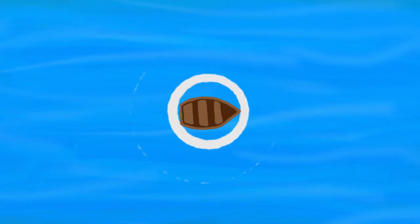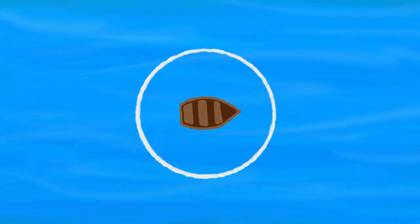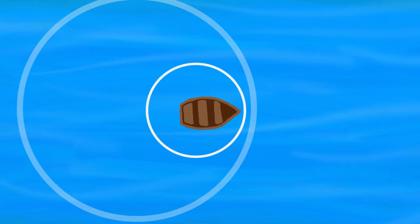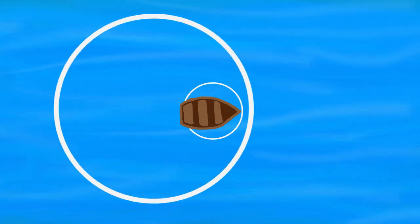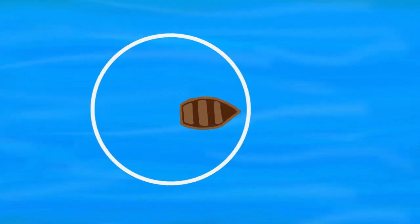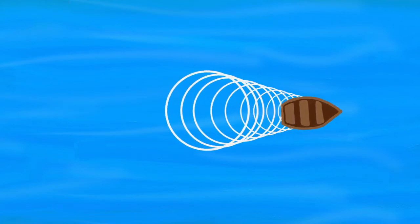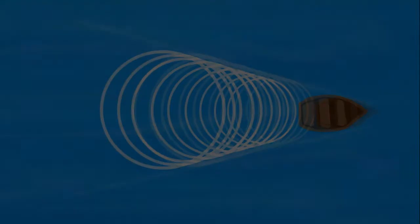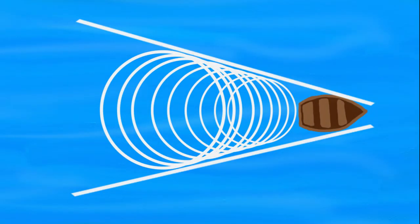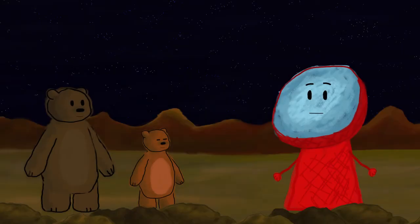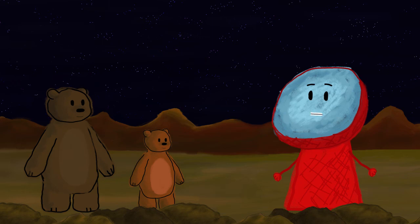When the boat is moving, it makes waves. The waves move out from the boat in a circle shape. As the boat moves faster, the waves in front of the boat start to get all bunched up. Then when the boat moves through the water faster than the speed of the waves it is making, it creates a wake — a V-shape which follows behind the boat. We call this a shock wave.